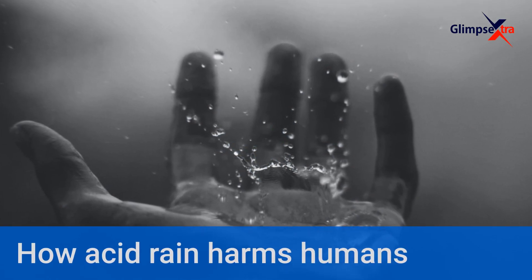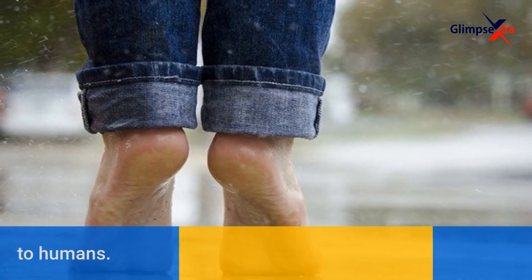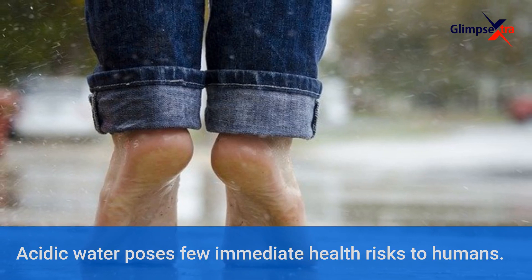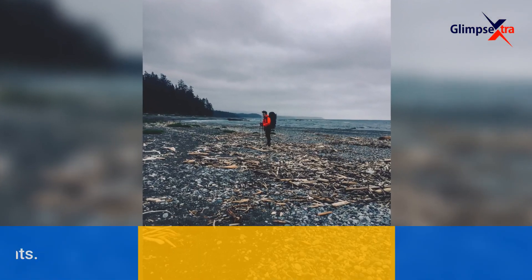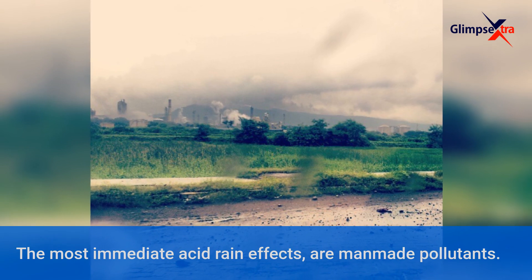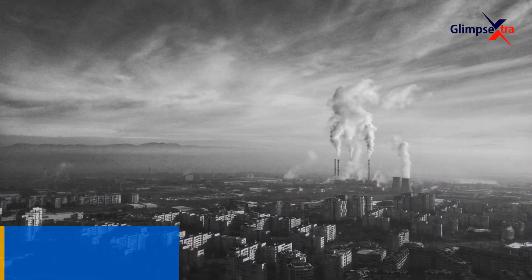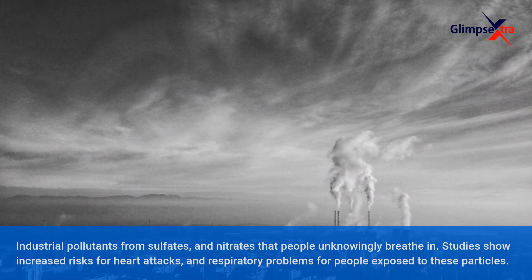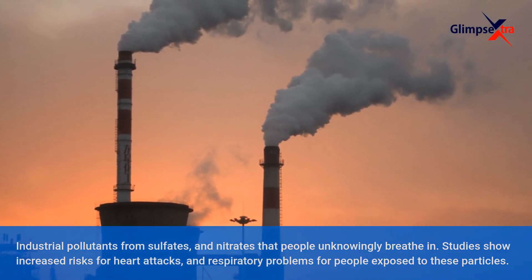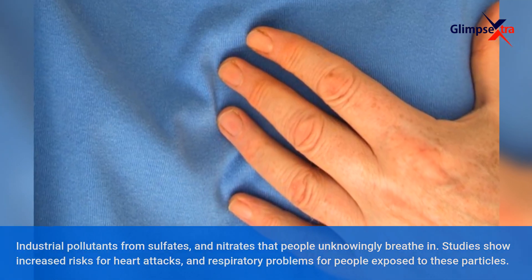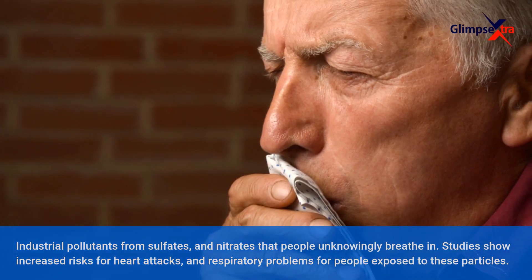How does acid rain harm humans? Acidic water poses few immediate health risks to humans. The most immediate acid rain effects are man-made pollutants — industrial pollutants from sulfates and nitrates that people unknowingly breathe in. Studies show increased risks for heart attacks and respiratory problems for people exposed to these particles.